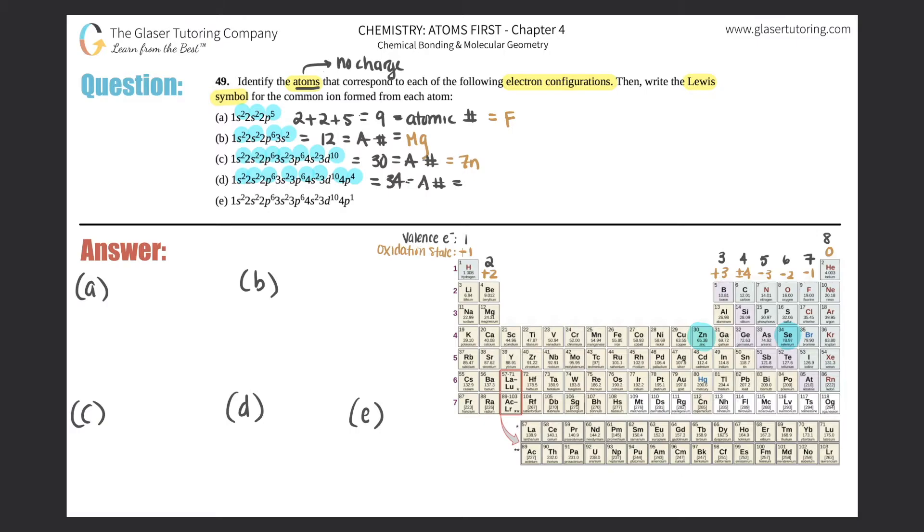I'm just going to erase these. So this is Se. And then finally we have 2 plus 2 plus 6 plus 2 plus 6 plus 2 plus 6 plus 2 plus 10 plus 1. So it looks like it's basically going to be number 31, and that's the atomic number. So 31 is gallium, Ga.